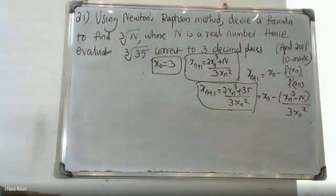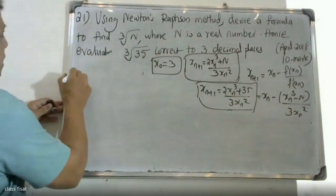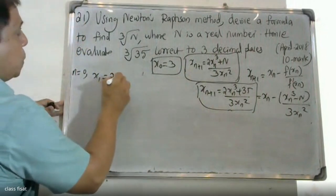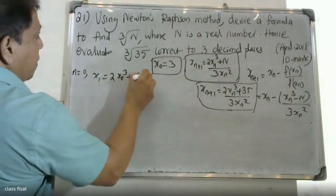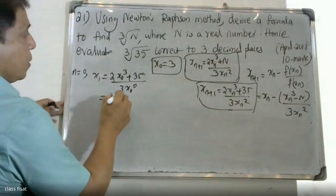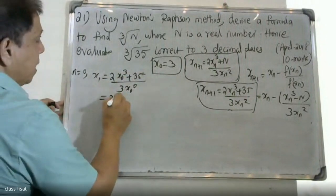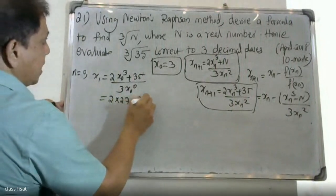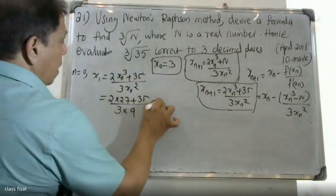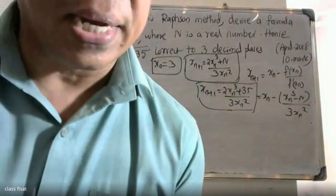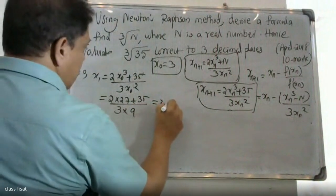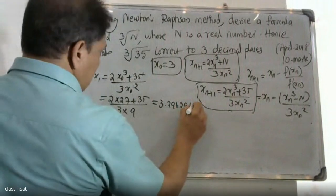Starting with x0 equal to 3, we compute x1 using the formula (2x0³ + 35) / (3x0²). Substituting x0 equals 3, we get x1 equal to 3.2962963.